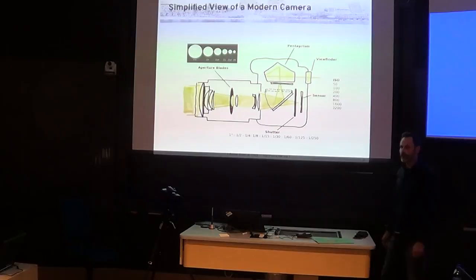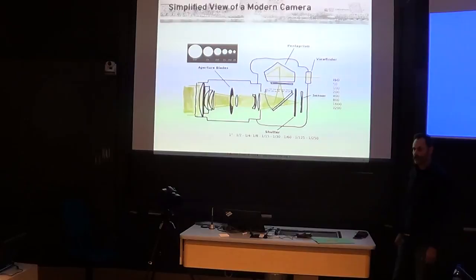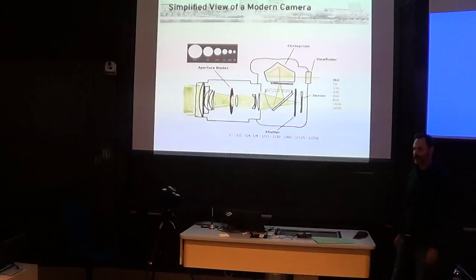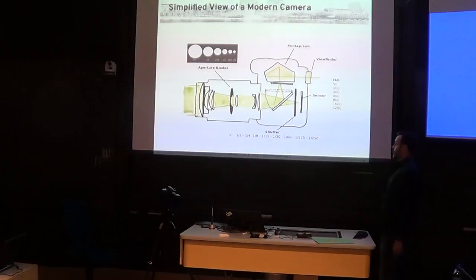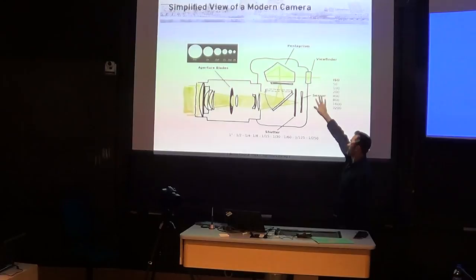One of the big design issues with SLRs is the fact that you've got this mirror that springs up and crashes into what is above it, causing the camera to shake at just the moment that your focal plane shutter is taking the exposure. Here you've got the sensor — we basically measure the sensor's sensitivity in something called ISO.